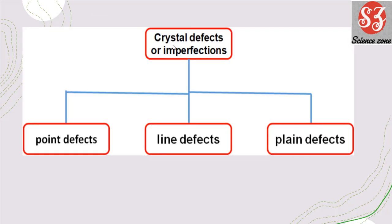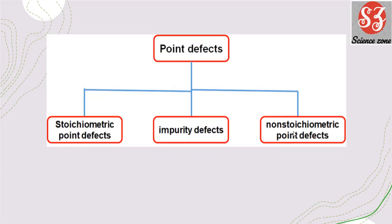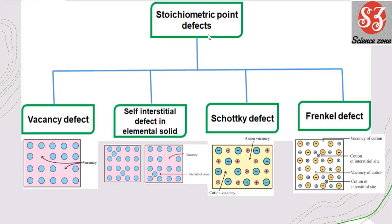Next is crystal defects. Crystal defects, also called imperfections, occur when a crystal differs from its expected ideal structure — due to impurities, vacancies, or other problems. There are three types: point defect, line defect, and plane defect. This chapter focuses on point defects, which are of three types: stoichiometry defect, impurity defect, and non-stoichiometry defect.